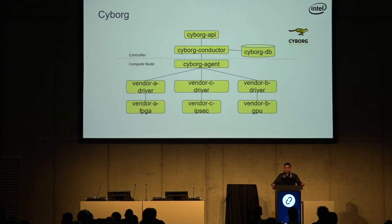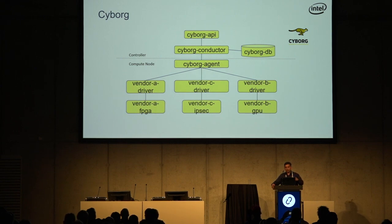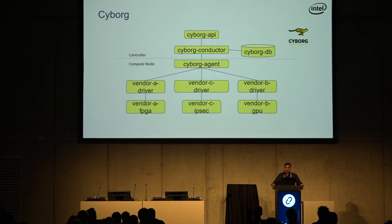On the compute node, you've got a daemon called the agent — somewhat similar to what Nova compute does. We handle devices through the Cyborg agent. The agent has a standardized API to various drivers. Some drivers could be in-tree, some out-of-tree, so you can combine all of them in a given operator's deployment. Each driver handles a family of devices.